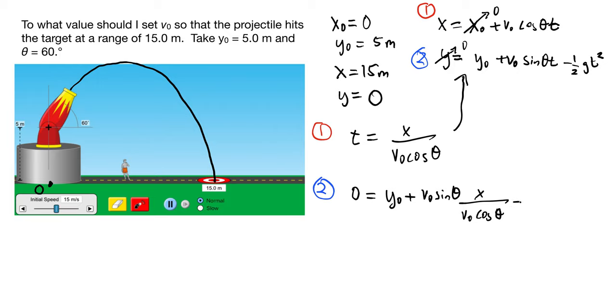And then I plug that in up here for one half g t squared. I have to use the same value for the time: one half g, and I'll go ahead and put this in here, x over V0 cos theta, whole thing quantity squared.